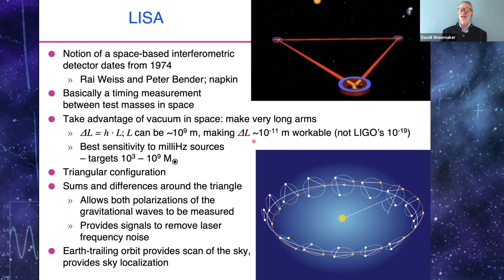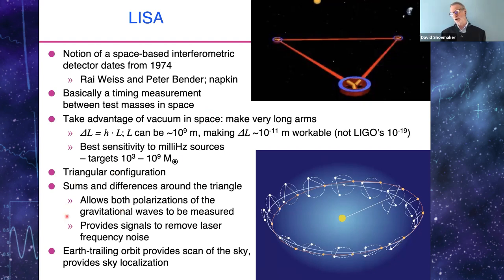A triangular configuration is used, with sums and differences taken around the loop in both directions. All three arms and all six links are instrumented, allowing both gravitational wave polarizations to be measured, providing signals to remove laser frequency noise, and generating a null stream to test noise performance. The Earth-trailing orbit has this triangle cartwheeling around the Sun at one astronomical unit, making a scan of space and allowing long-lived sources to be viewed from various perspectives, improving localization ability.